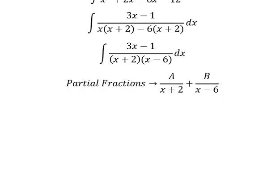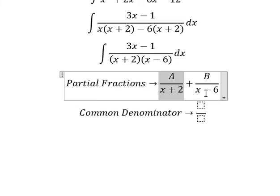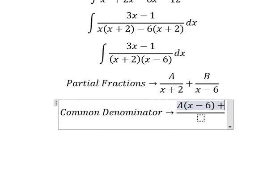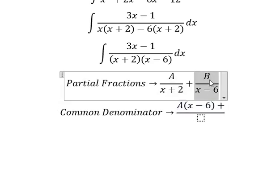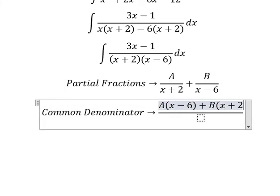Next we do common denominator. About this one it is missing x minus 6, so capital A multiplied by x minus 6. About this one it is missing x plus 2, so capital B multiplied by x plus 2.